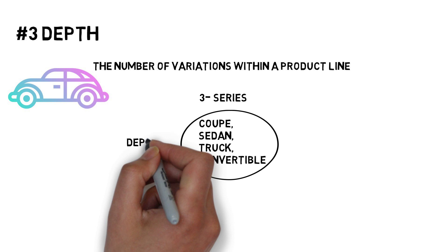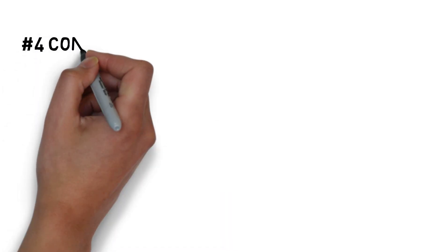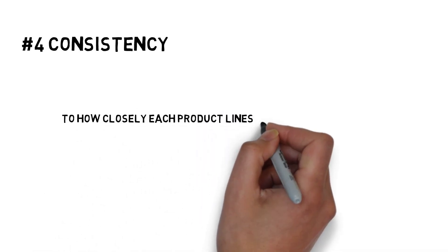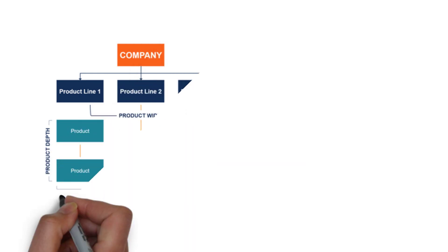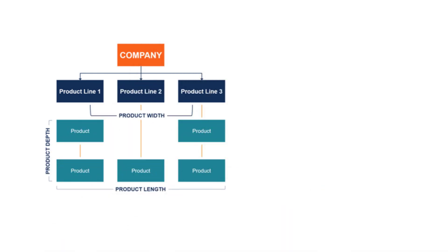In product mix, fourth one is consistency. Consistency refers to how closely each product line is related to each other. By this structure, you can easily understand about product mix.